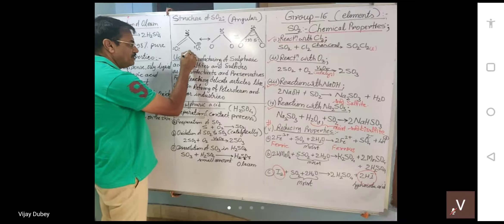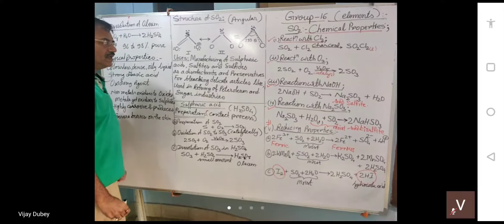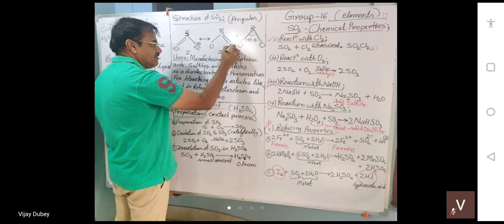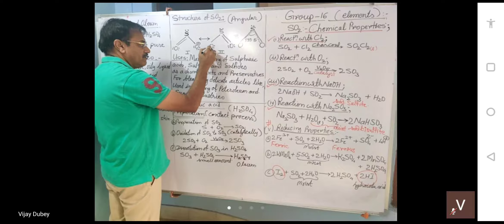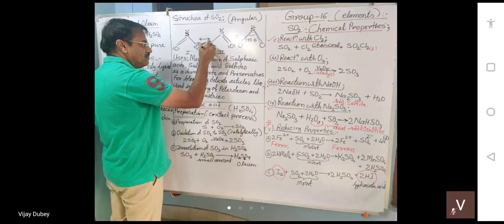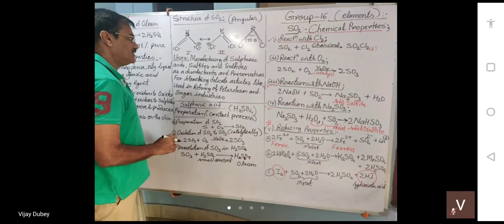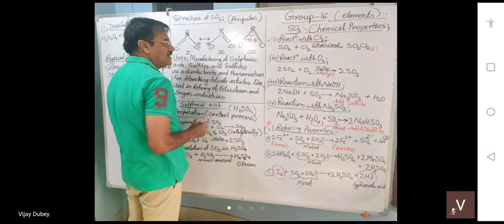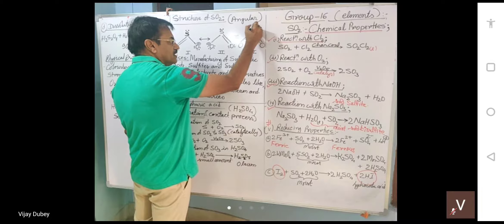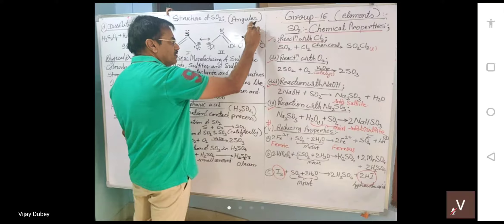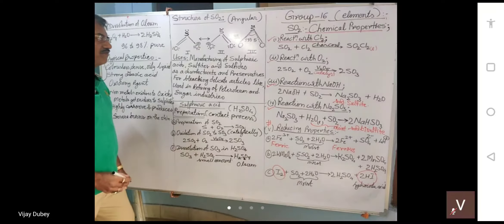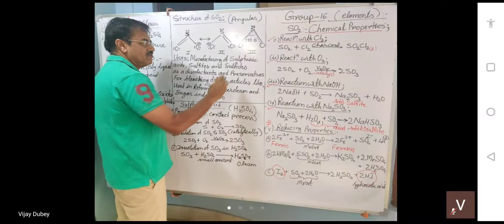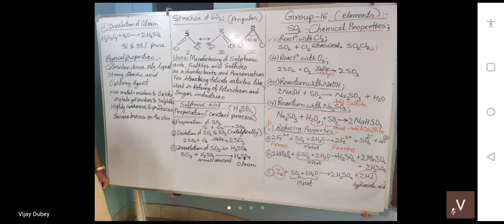This is resonating structure one of SO2. In resonating structure two, the double bond position shifts — the other oxygen gets the double bond and the first oxygen now has a single bond with sulfur. Structures one and two are the resonating structures, and structure three is the resonance hybrid, which is the most stable structure. The pi electrons are equally shared by both oxygens, and the bond angle is found to be 119.5 degrees.